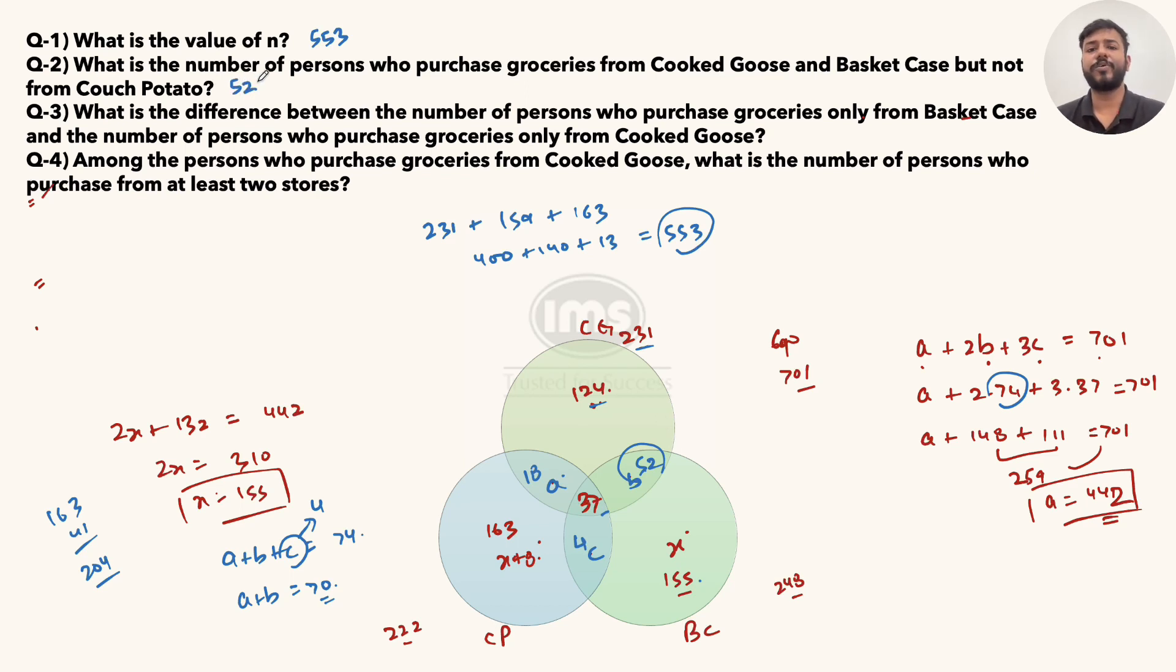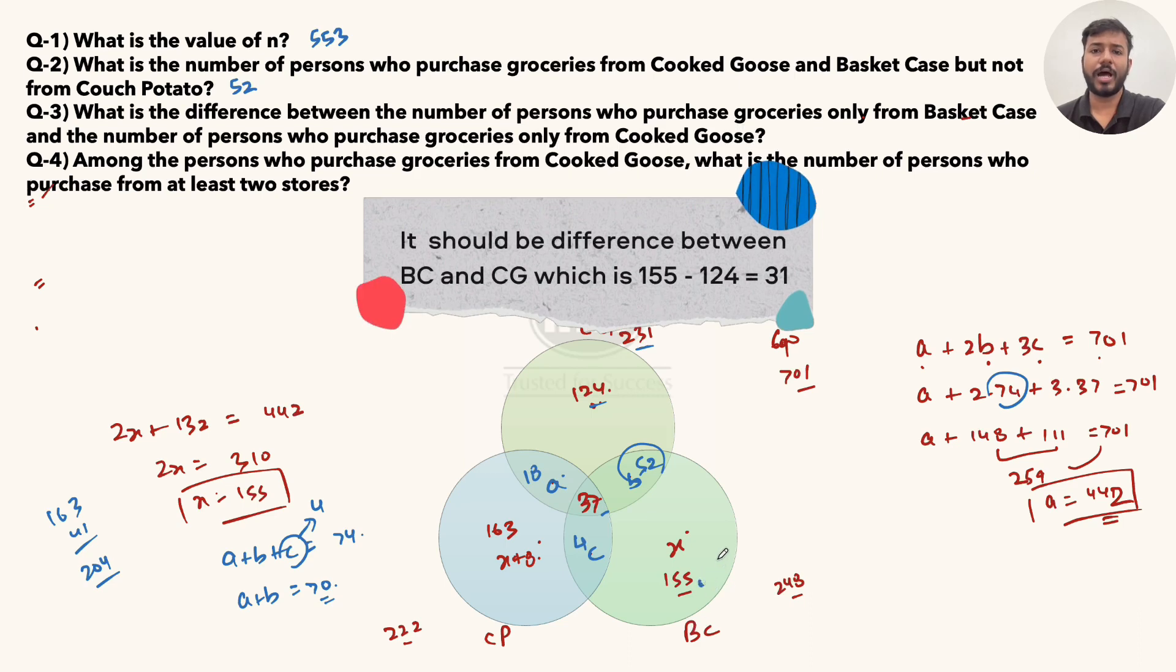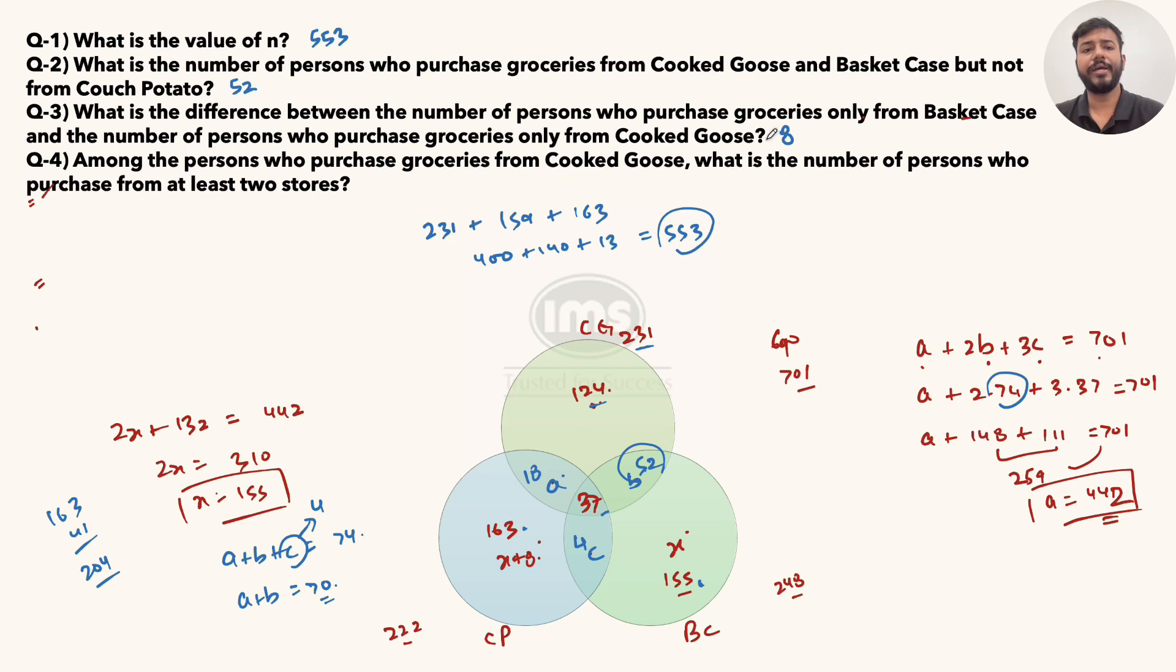Third problem: What is the difference between the number of persons who purchase groceries only from Basket Case and the number of persons who purchase groceries only from Cooked Goose? Basket Case only is 155 and Cooked Goose only is 124. So 155 and 124 difference would be 31. Wait, 163 and 155 difference would be 8.